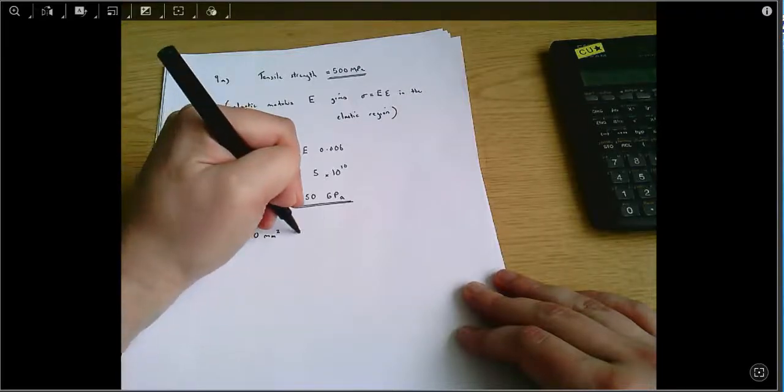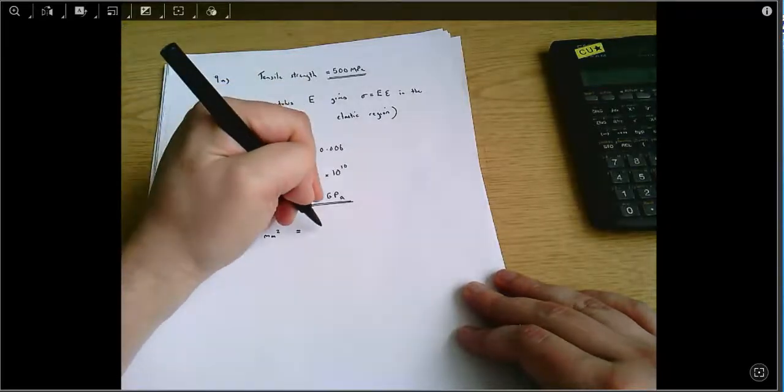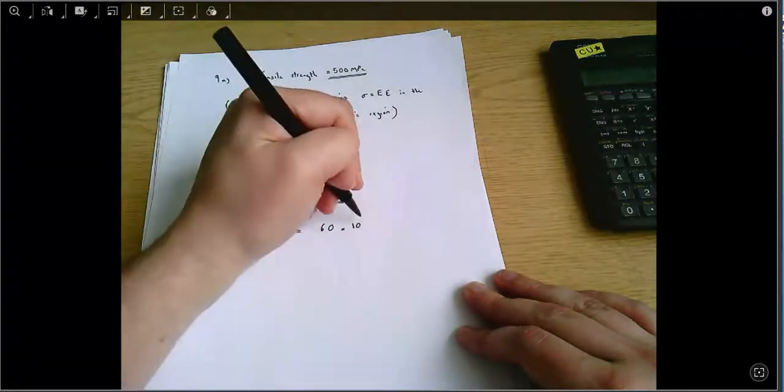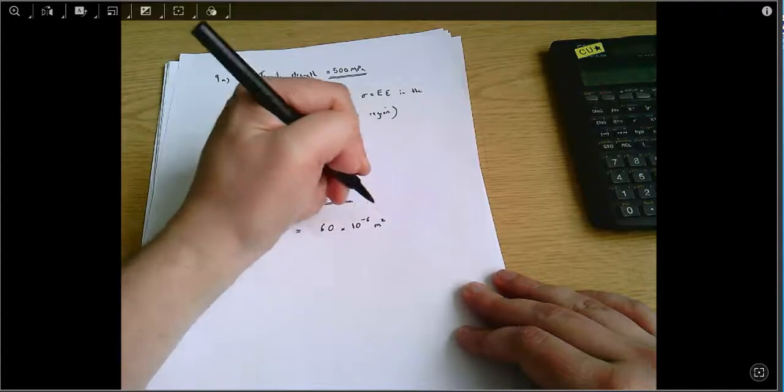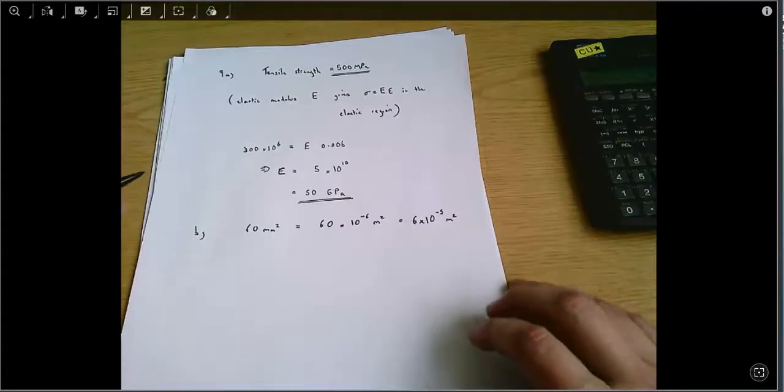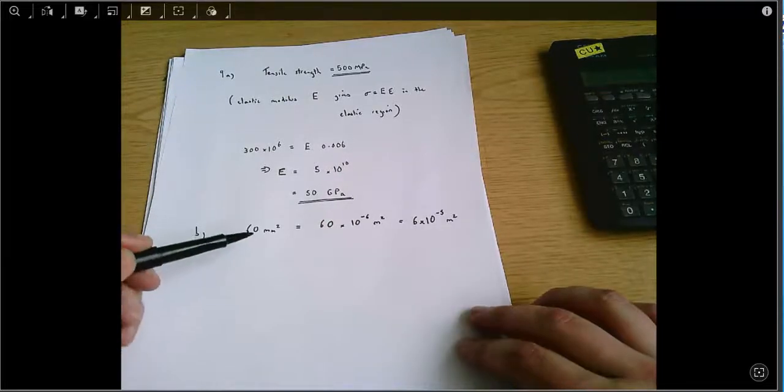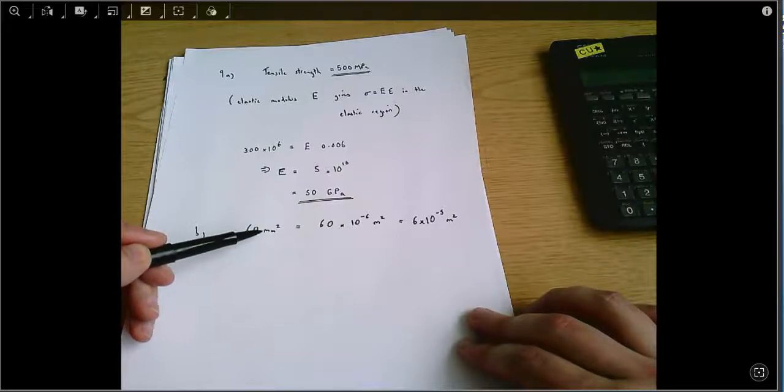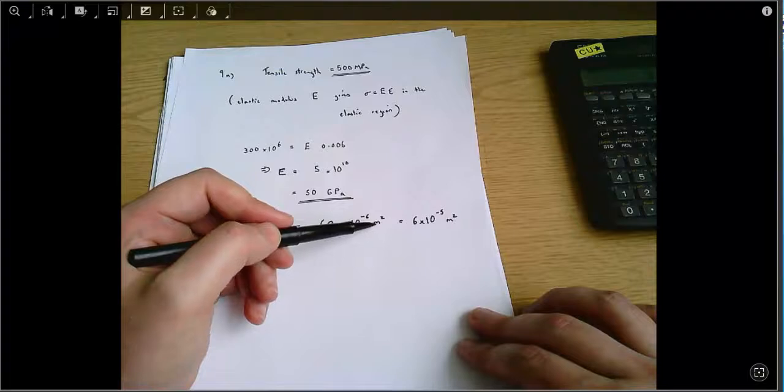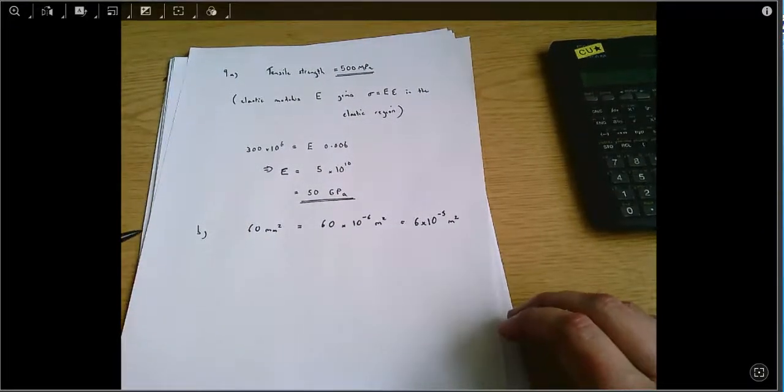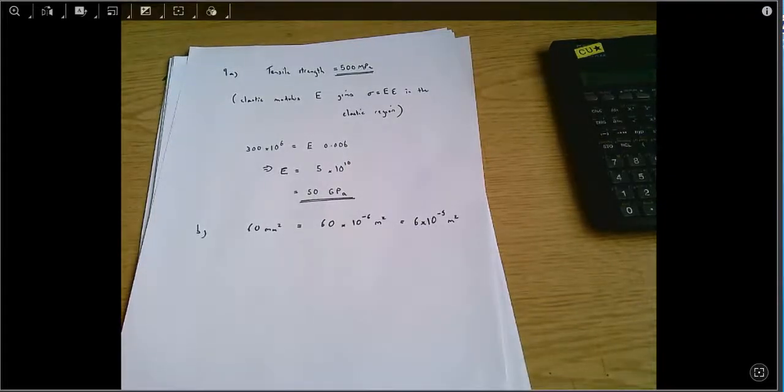60 square millimetres equals 60 times 10 to the power of minus 6 square metres, equals 6 times 10 to the minus 5 square metres. It's important to note one millimetre is 10 to the minus 3 metres, so one square millimetre is 10 to the minus 6 square metres. I just wanted to make sure I had that number clear in my own head.